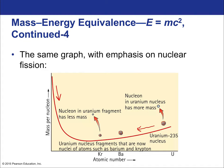In fission, uranium-235 splits into daughter fragments such as barium and krypton, which have less mass per nucleon than uranium. That lost mass becomes energy — primarily the kinetic energy of the daughter nuclei. This works for any element heavier than iron, and is most productive for the heaviest elements where the mass-per-nucleon curve is steepest, yielding the most energy per fission event.